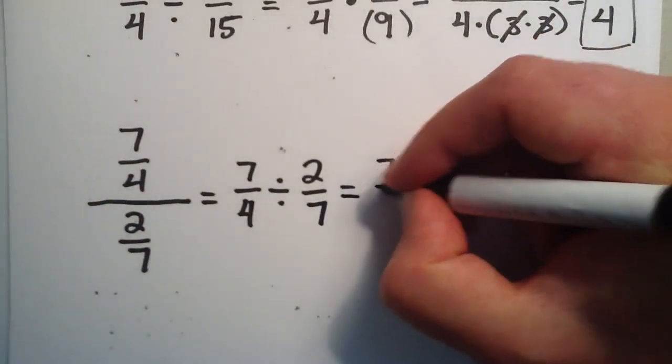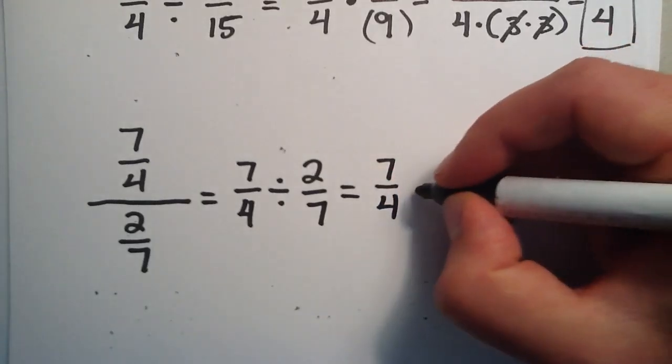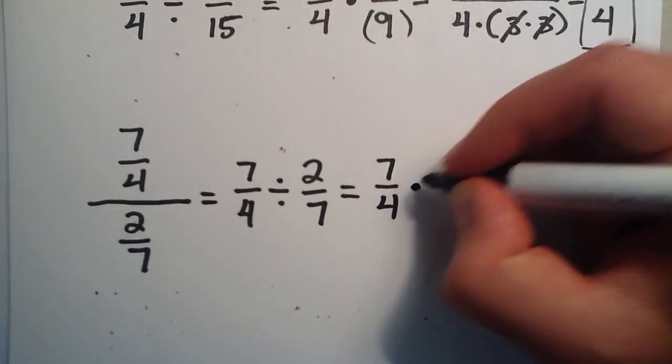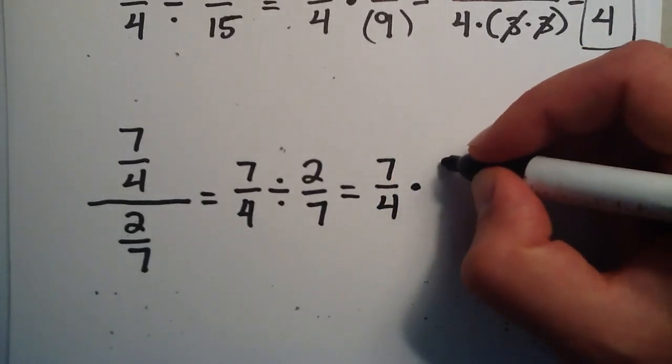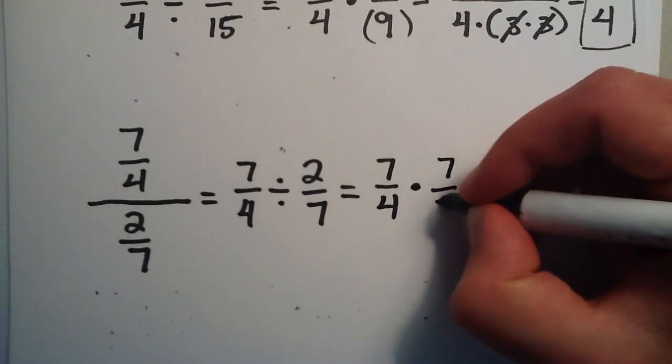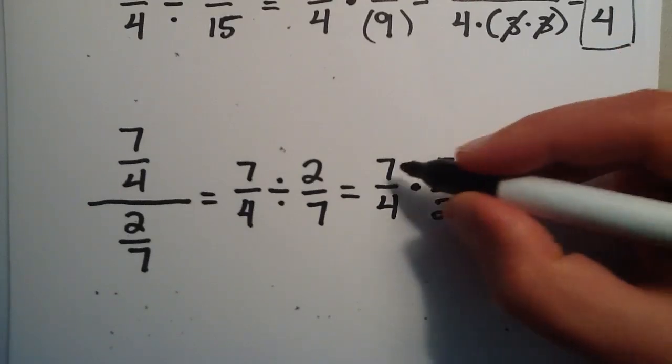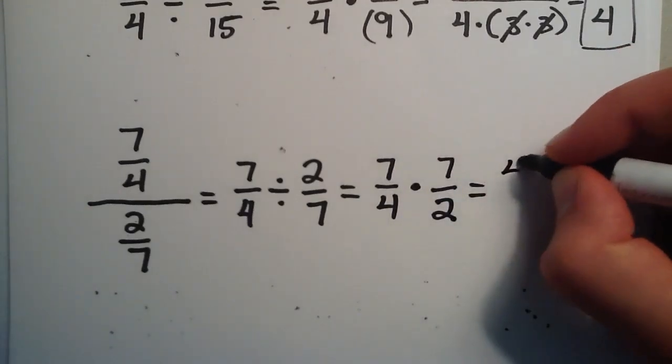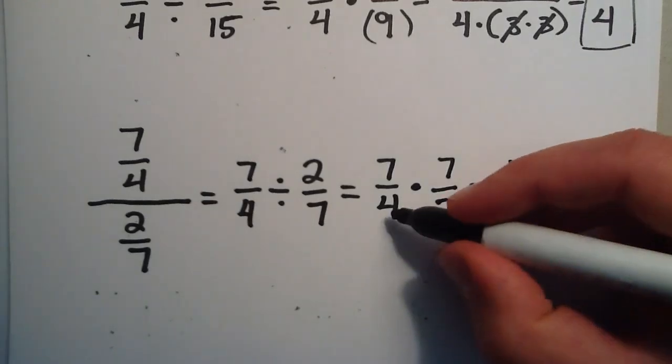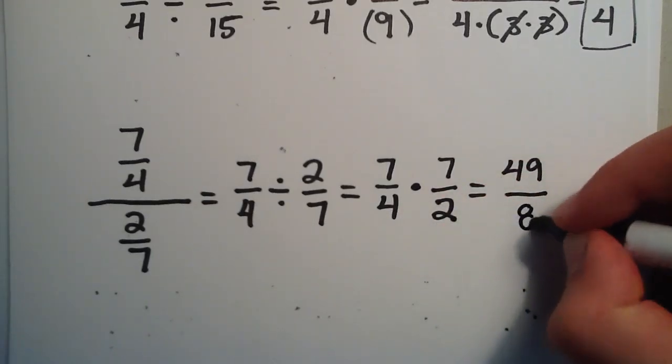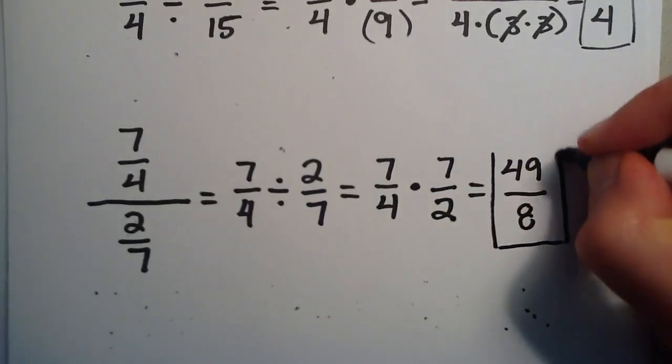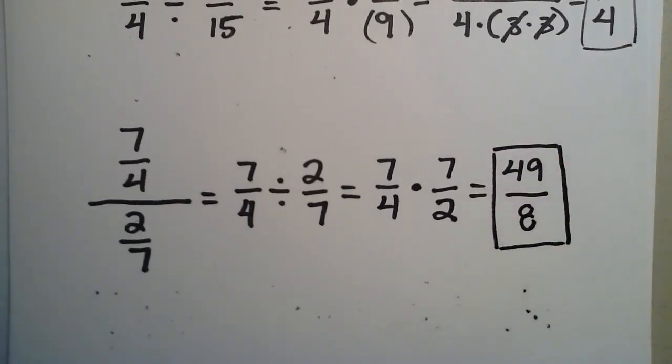Now we go ahead and we write the first fraction the same, 7 over 4, and we change the division to multiply, and the 2 over 7 gets flipped to 7 over 2. And then we just have 7 times 7 is 49 divided by 4 times 2, which is 8. And I believe that is simplified as far as it goes. So that is your answer.